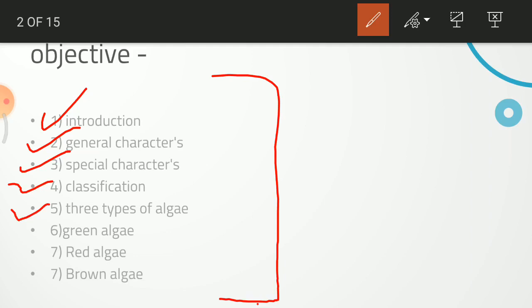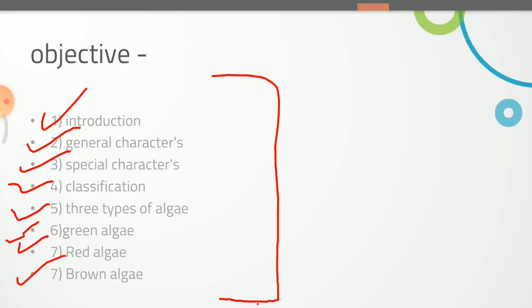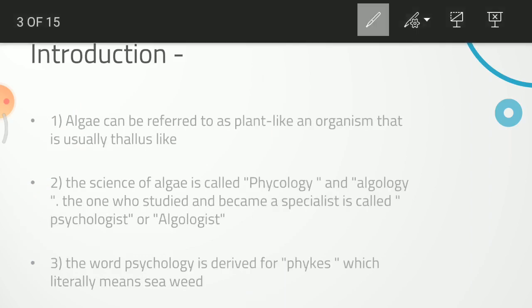We will learn three types of Algae: first, green Algae; second, red Algae; and third, brown Algae. We will discuss questions about each of these.